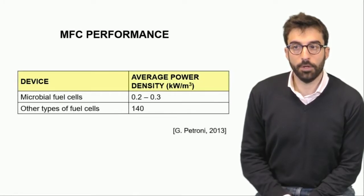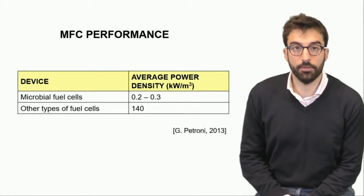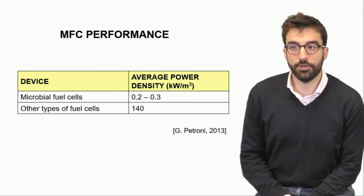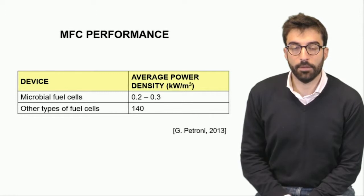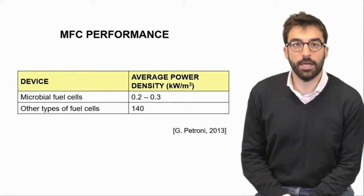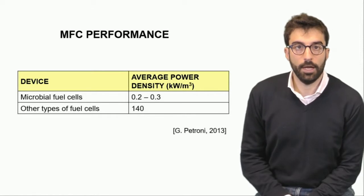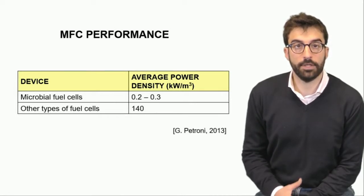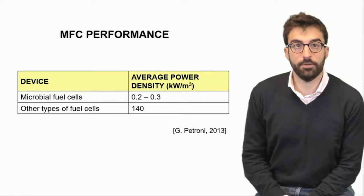Regarding the performances, we usually have very low performances compared to other kinds of fuel cells. We have power range density in the order of 0.2-0.3 kilowatt per cubic meter, which is pretty far from other kinds of fuel cells. But here again it's important to underline that this kind of technology has a double effect, so we don't need to only produce electricity but we need to stabilize the organic matter. Usually this process is energy intensive and energy requesting, so we have an active process compared to a passive process that is the one that usually is used for this function.